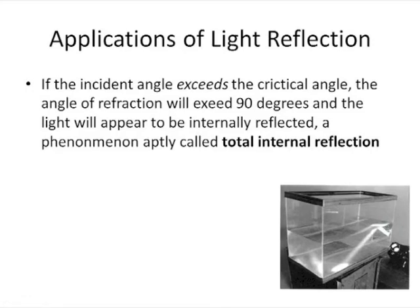So if the incident angle exceeds the critical angle, the angle of refraction will exceed 90 degrees. And the light will appear to be internally reflected. This is a phenomenon aptly called total internal reflection. As we can see in this picture here, the incoming angle is greater than the critical angle so that the light appears to be reflected off the top of the surface.